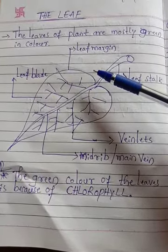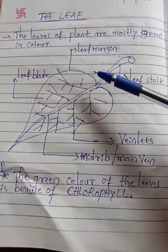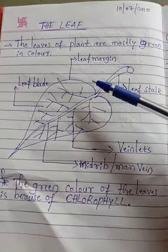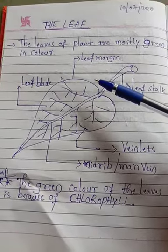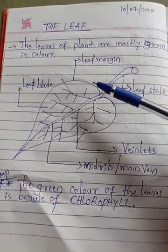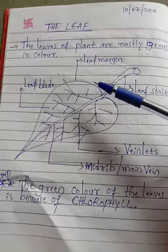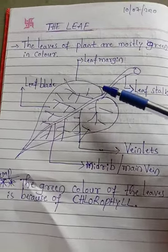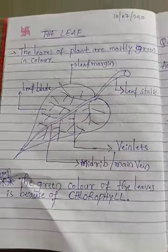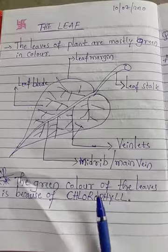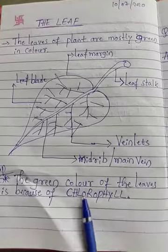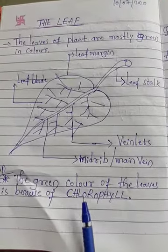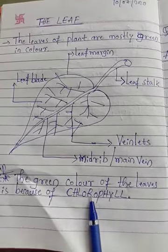Why is the leaf color only green? Most of the leaves are green color because of one main point — that is chlorophyll. Due to the presence of chlorophyll in the leaves, the leaves appear green in color.